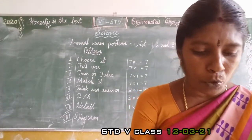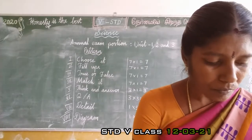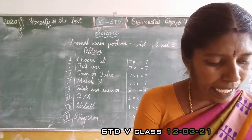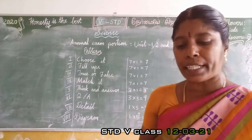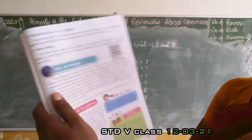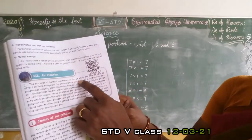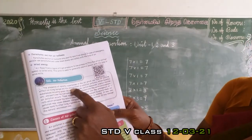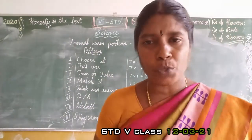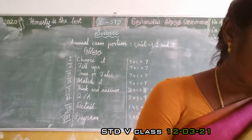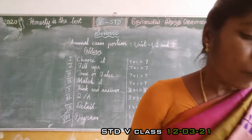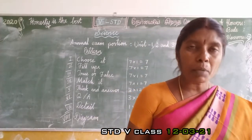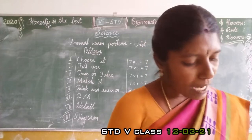What is air pollution? Refer to book page number 99. The presence of harmful substances in the air which can have an adverse effect on living beings and the environment is called air pollution.